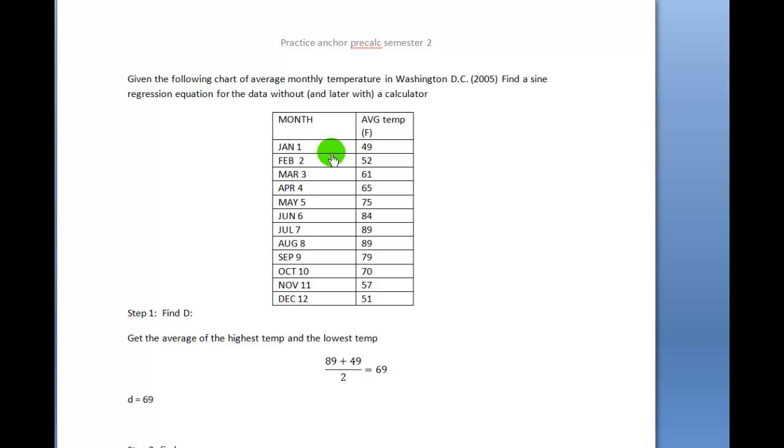These numbers should look familiar - it's what we worked on in class right before the break. January, the first month, 49 degrees; February, the second month, 52 degrees, and so on down to December, the 12th month, with an average temperature of 51 degrees.